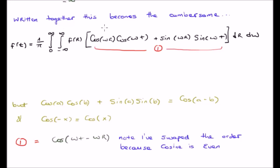We note that we have the product of two cosines added to the product of two sines. This may be rewritten as nothing else but the cosine of a minus B.